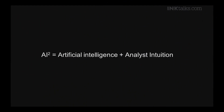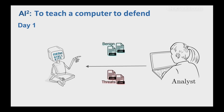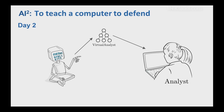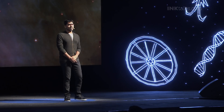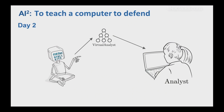That's exactly what we did. We built something called AI Square — a mixture of artificial intelligence and analyst intuition. On the first day, the analyst gives examples of attacks and benign events. On the second day, the AI learns a model that imitates an analyst. From that point on, the model can make predictions — it filters out benign events and highlights the ones it thinks are attacks — giving us what we call a virtual analyst.